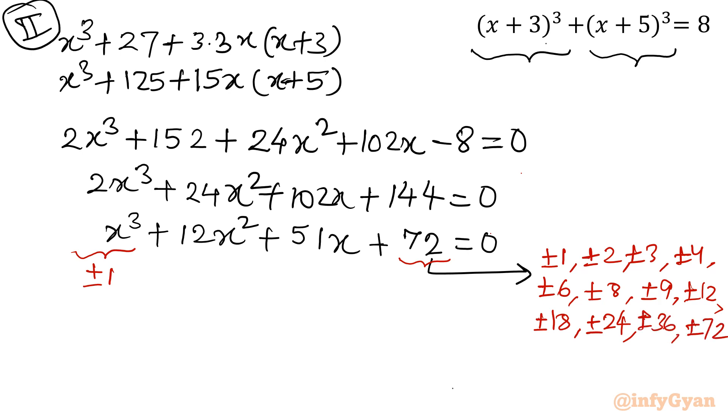Out of these eligible numbers, we are having x equal to, if I will put negative 3, see what will happen. Minus 27, then it will become 108. Negative 3 square is 9, 12 times 9 is 108. 51 times negative 3, so that would be negative 153 plus 72. If you will add 108 and 72, 180. 27 and 153, 180. So this is giving us 0.